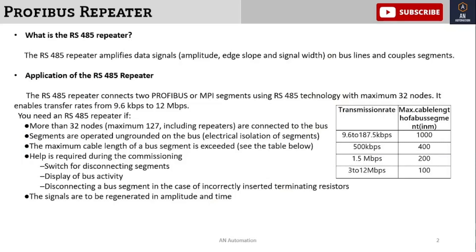What is an RS485 repeater? The RS485 repeater amplifies the data signal — that is, it amplifies the local signal across all bus lines and couples segments. The RS485 repeater connects two Profibus or MPI segments using RS485 technology with a maximum of 32 nodes, enabling transfer rates from 9.6 kbps to 12 Mbps.